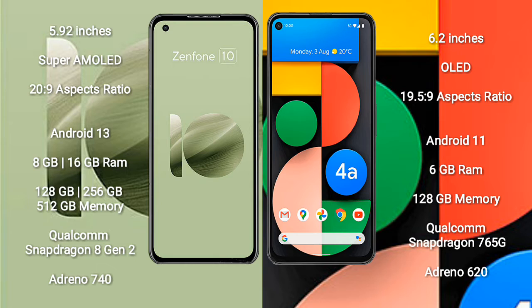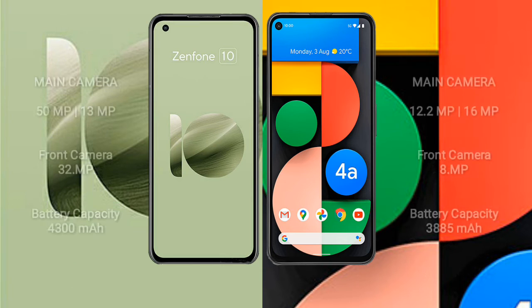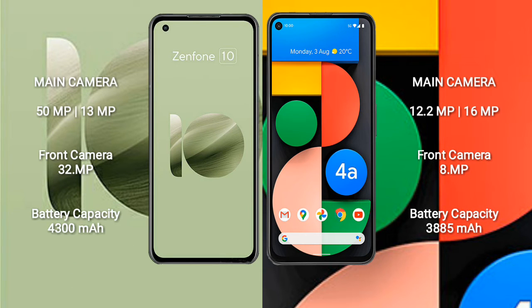Google Pixel 4a comes with 6GB RAM and 128GB internal storage, with a Qualcomm Snapdragon 765G processor and Adreno 620 GPU.